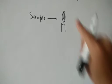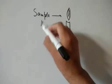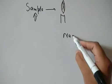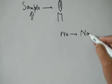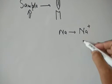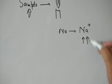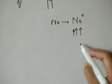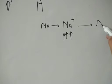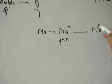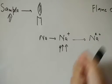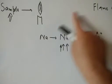So what happens in the flame? For example, if our sample has the presence of sodium atoms, that sodium will get ionized into a sodium ion. Then that sodium ion will absorb the energy — it will absorb the heat of the flame — and it will go from the ground state to the excited state.